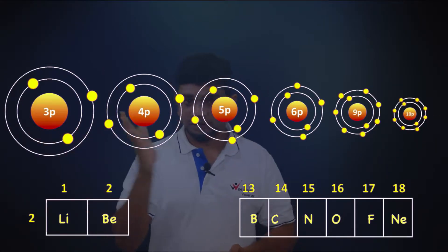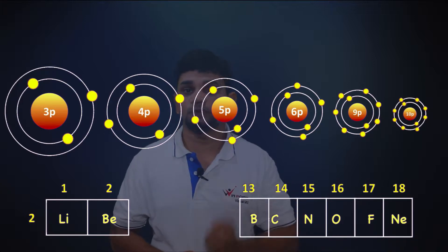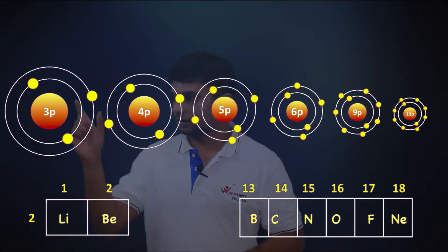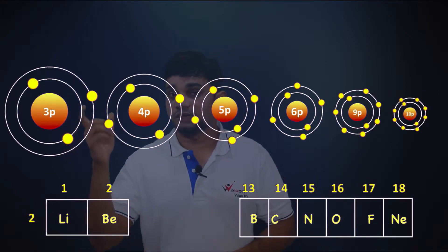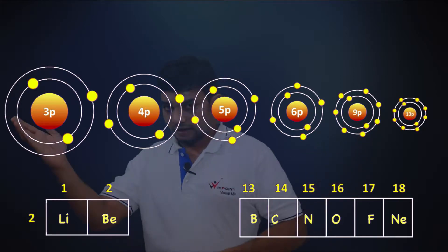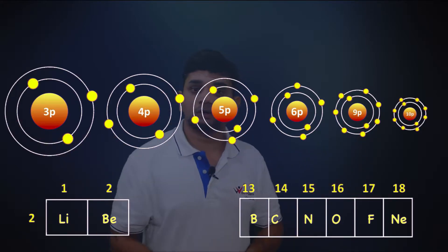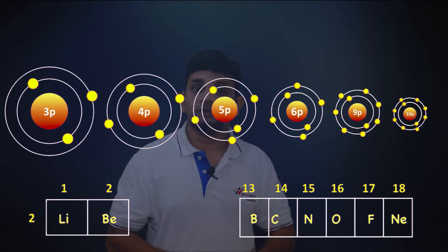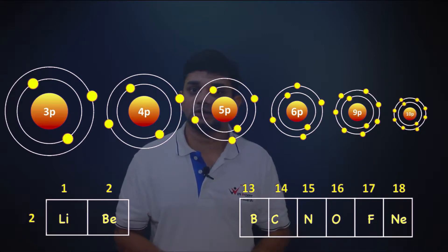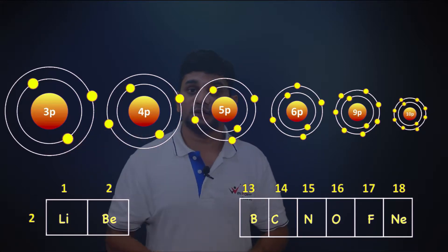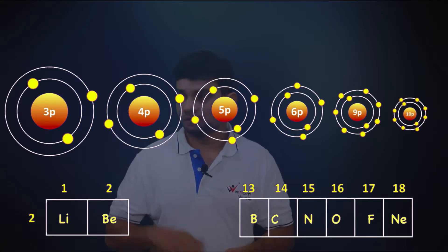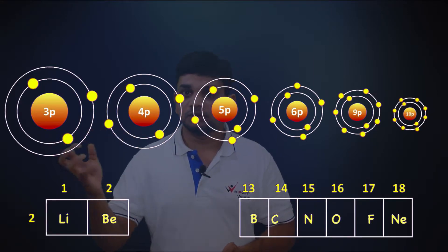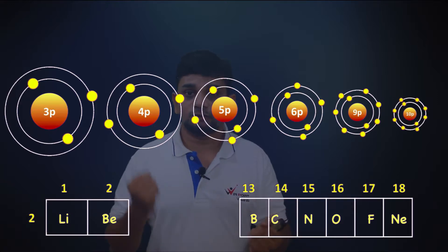Along the period, the atom is getting smaller because of an increase in the power of the nucleus. The smaller atom will not donate electrons easily. So along the period, the tendency to donate electrons is decreasing, which means metallic character is decreasing because the size is decreasing.